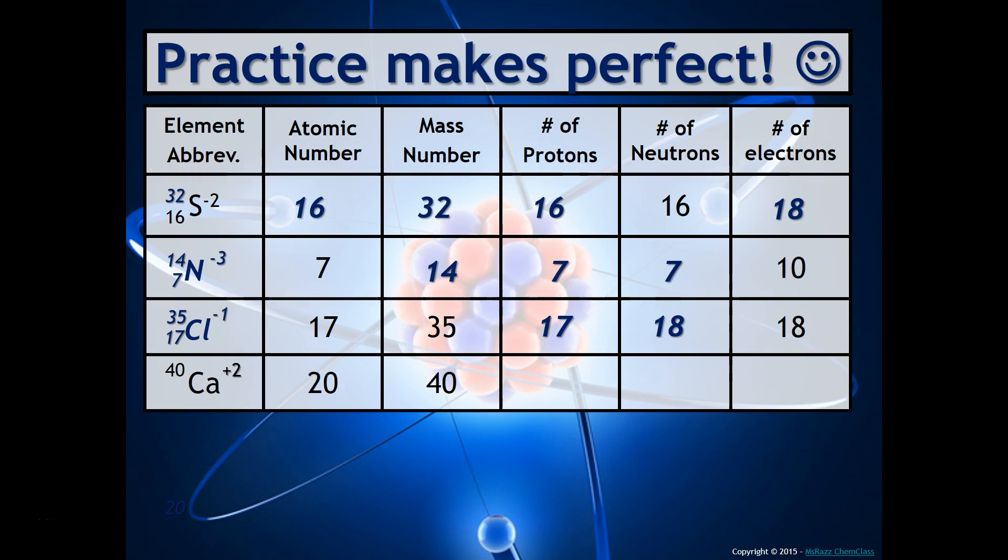And then, finally, for calcium, number of protons would be 20, neutrons would be 20, and electrons, be careful here, notice the charge is plus 2. So, if the charge is plus 2, that means that you must have two less negative things, right? Because, again, we can't change those protons. So, you must have two less negative things in this atom, and so that's why the number of electrons would be 18. And then, you do have to fill in that lower left-hand corner, and that would be 20.